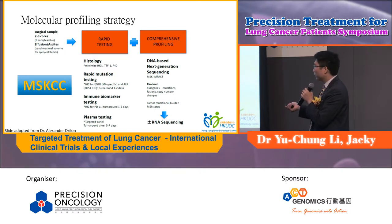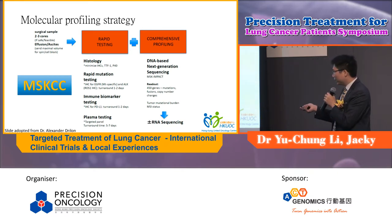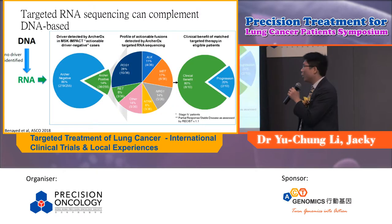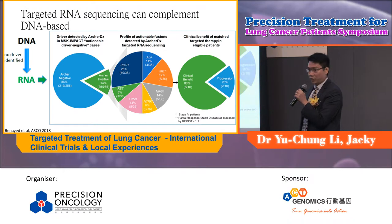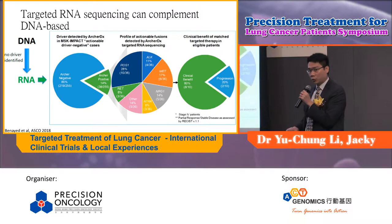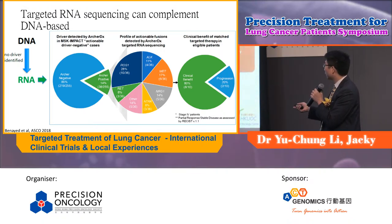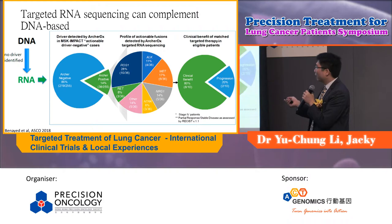Everybody was subject to next-generation sequencing using their in-house MSK-IMPACT panel detecting over 400 genes, with routinely reported TMB and microsatellite instability status. For selected cases, they will send for RNA sequencing. RNA sequencing is very important and it complements DNA-based NGS techniques. In patients deemed to have no driver mutation on DNA NGS, if you send for RNA sequencing, 40% will reveal a detectable, actionable fusion such as ROS1, ALK, or MET exon-14 splicing mutations, and among those, 80% can derive clinical benefit.